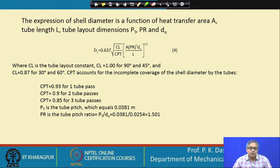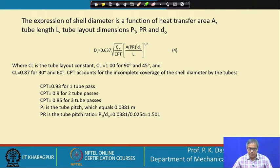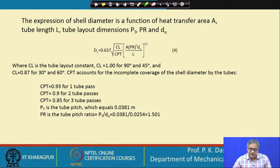So far we have not obtained the shell diameter. The tube length is around 15 meters from our calculation, so the shell length should also be of that order. The expression for shell diameter is a function of heat transfer area A, tube length L, tube layout parameters PT and PR, and the outside diameter of the tube. There is an empirical formula with which the shell diameter DS can be found.